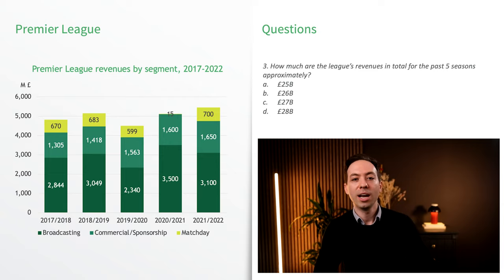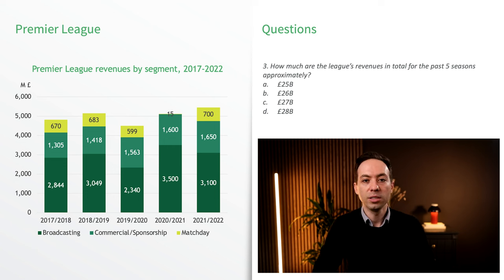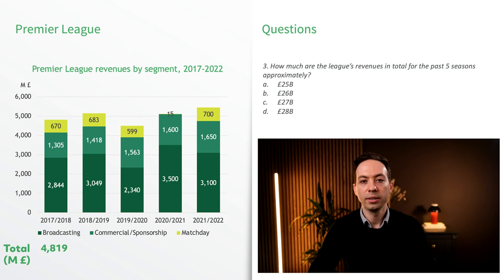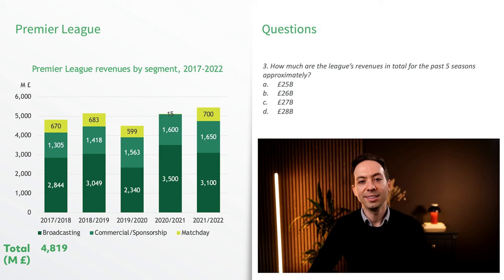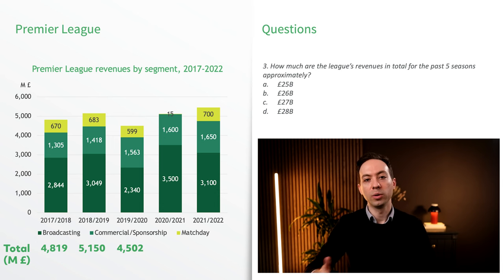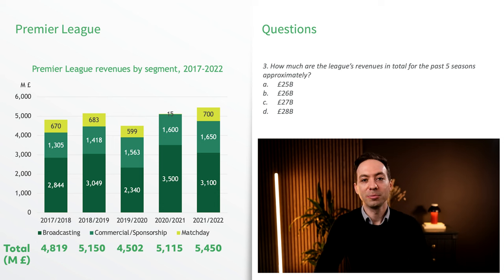The final question asks us to estimate the total revenues of the Premier League for the past five years. We sum up all figures year by year. For 17-18, the revenue totals 4.819 billion (2.844B + 1.305B + 670M). For 18-19, it's 5.15 billion. For 19-20, it's 4.502 billion. For 20-21, it's 5.115 billion, and for 21-22, it's 5.45 billion. In total, the Premier League's revenue for the past five years is around 25 billion pounds. The calculations are straightforward — the challenge is to interpret the chart quickly and correctly.